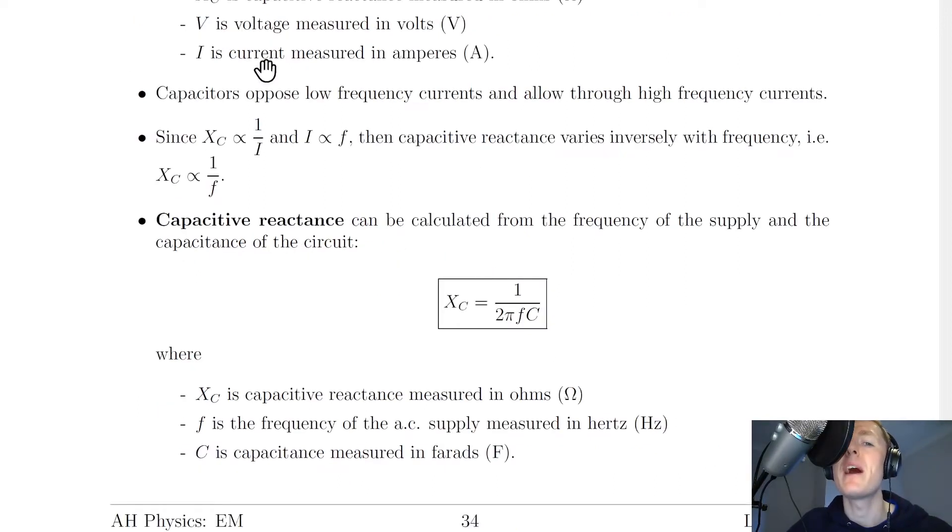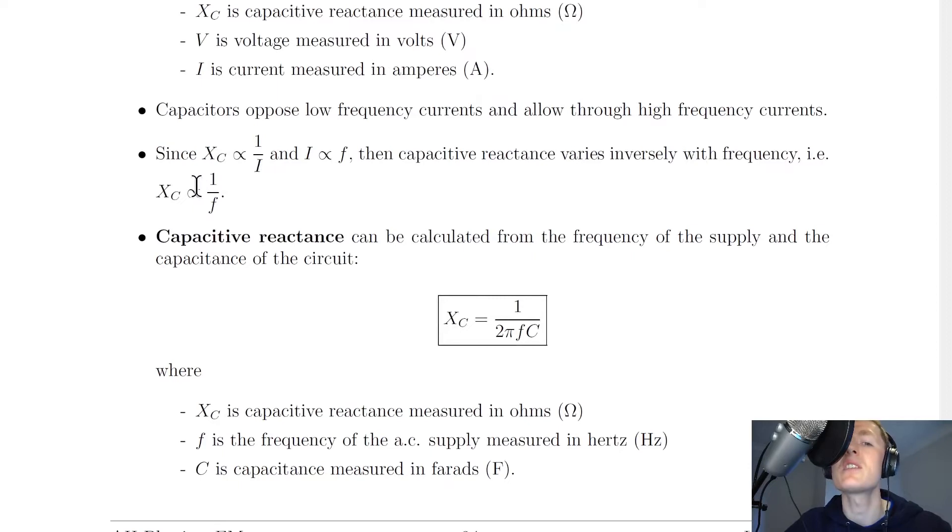Capacitors oppose low frequency currents and allow through high frequency currents. And we can see this by manipulating some of the expressions that we've already seen. So we can firstly say that XC, the capacitive reactance, is inversely proportional to the current I, or directly proportional to 1 over I.